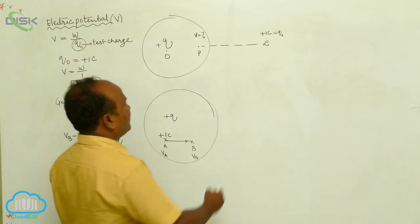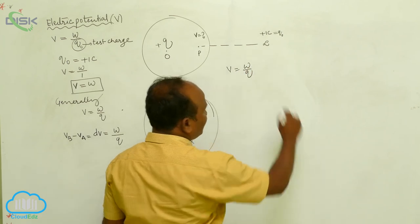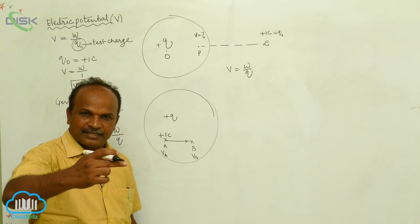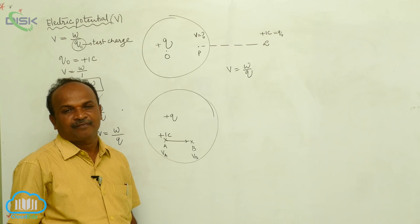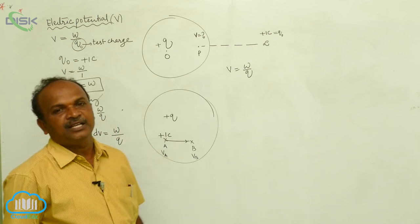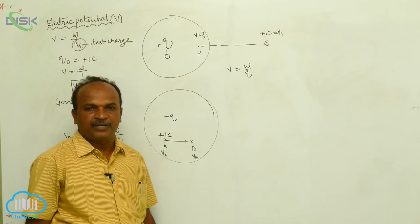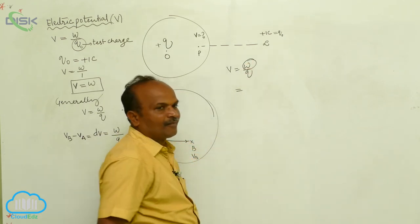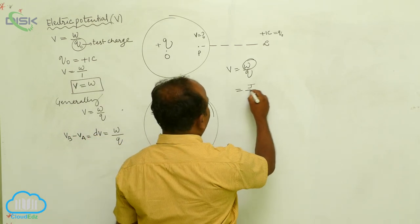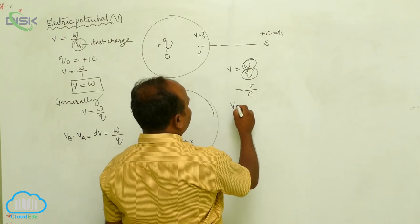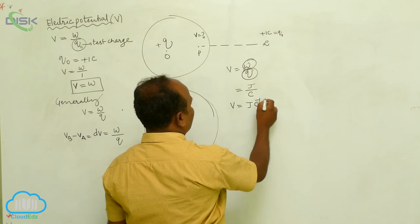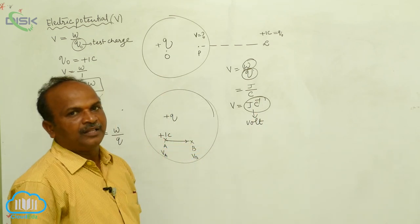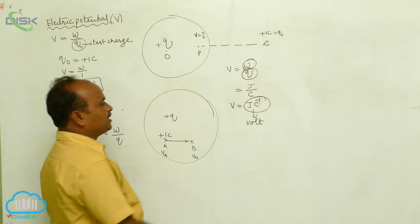The general formula is V = W/Q. In moving between any two points, there is a potential energy difference. That potential energy difference per unit charge is called electric potential difference. The unit is: W is work done in Joules, Q is charge in Coulombs, so V equals Joules per Coulomb. Joules per Coulomb is known as Volt. The unit of potential difference is called Volt.